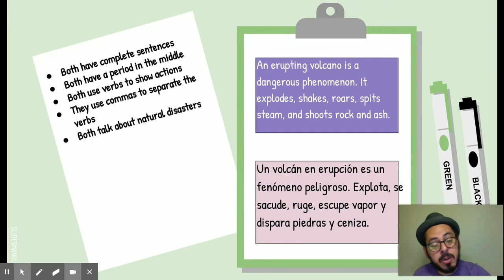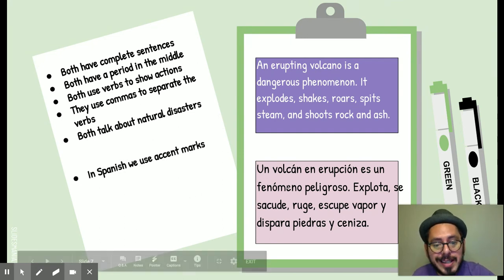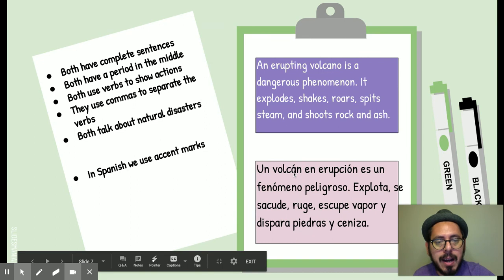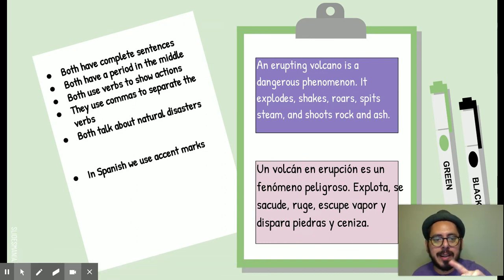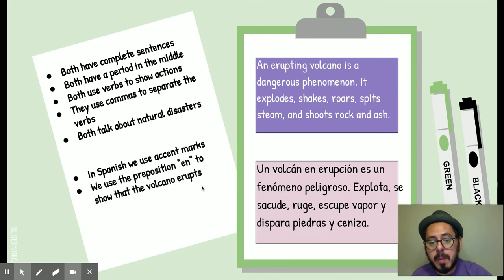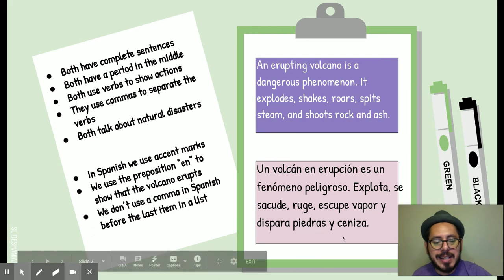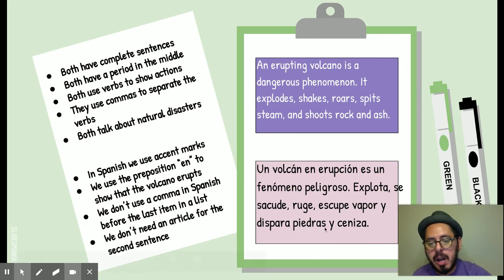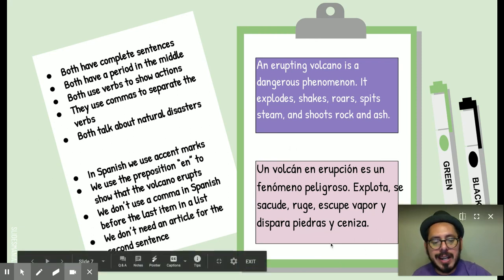Both talk about natural disasters. So, in Spanish, en español, usamos acentos, accent marks, para enfatizar la sílaba, para saber que es un volcán. Eso ya lo habíamos practicado. We use the preposition en to show that the volcano erupts. En erupción es lo que les estaba hablando. We don't use a comma in Spanish before the last item in our list. That's what we've talked about.